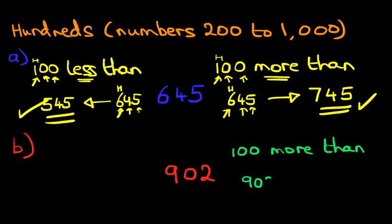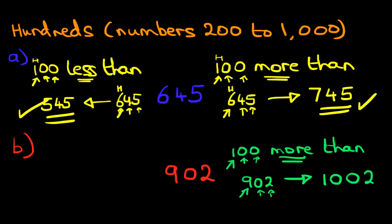Let's write the number down again. Are we going to go forwards or backwards? Well, it's more than, so we're going to go forwards. The first two digits are not going to change — they're going to remain the same. The 9, however, is going to go forward by 1. So 9 going forward by 1 is 10. So we've got 10 and we've got the 02 from the last two digits. So 100 more than 902 is 1002.